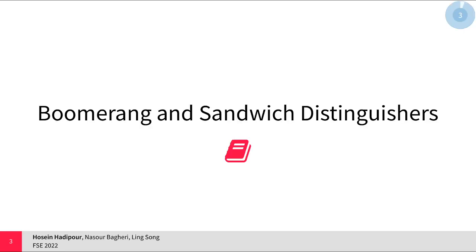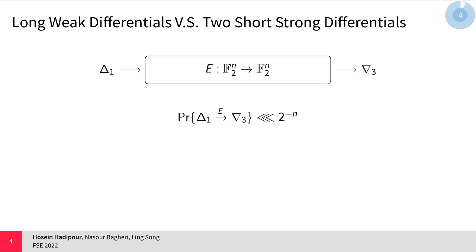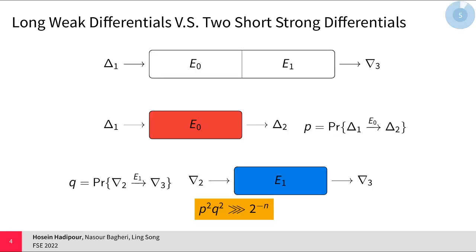Let's start with the first part, where I'm going to give a short introduction to boomerang and sandwich distinguishers. Given a block cipher E with block size of n bits, if we have a long differential transition with probability smaller than 2 to the minus n, we cannot exploit it to distinguish the block cipher E from a random permutation. However, what if we can divide the block cipher E into two smaller parts, E0 and E1, such that for each there exists a differential transition with a very high probability?